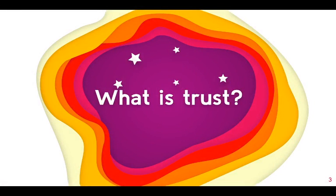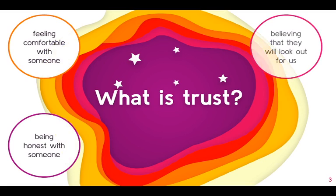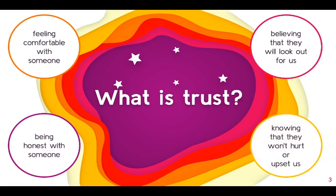We are going to start off by understanding what the meaning of trust is. The meaning of trust can be divided into four parts: feeling comfortable with someone, being honest with someone, believing that they will look out for us, and knowing that they won't hurt or upset us.